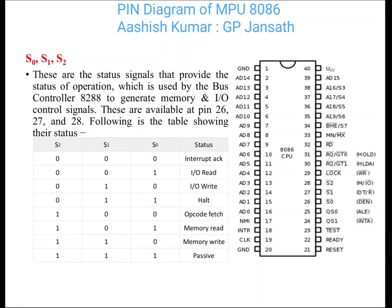S0, S1, S2: These are status signals used during operations. Basically, when we are in maximum mode and using a bus controller, these signals are used to generate control signals. The various operations indicated include interrupt acknowledgement, input/output read, input/output write, halt, code fetch, memory read, memory write, and passive states.